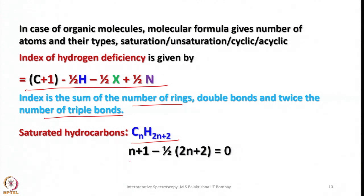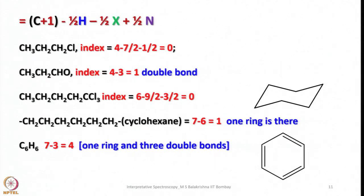Let us examine different compounds. For chloropropane: C+1 = 4, 7 hydrogens give 7/2, and 1 chlorine gives 1/2 — IHD = 0, a saturated compound. For propanal (C3H6O): C+1 = 4, 6 hydrogens give 3; oxygen is not counted — IHD = 1, indicating one double bond, which is consistent with an aldehyde. For a trichloropentane compound: 5 carbons give C+1 = 6, 9 hydrogens give 9/2, 3 chlorines give 3/2 — IHD = 0, saturated.